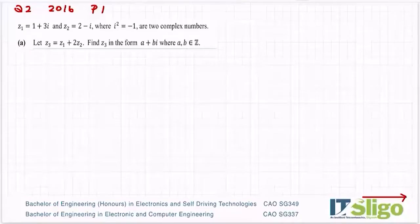Right, let's have a look at this question on complex numbers. It's from the 2016 paper. Z1 is equal to 1 plus 3i, Z2 is equal to 2 minus i. And of course in every question i squared is minus 1 and these are two complex numbers. Let Z3 equal Z1 plus 2 times Z2. Find Z3 in the form a plus bi.